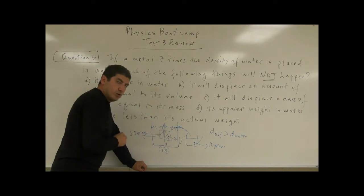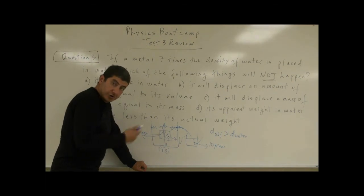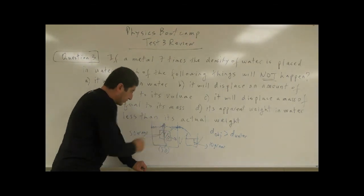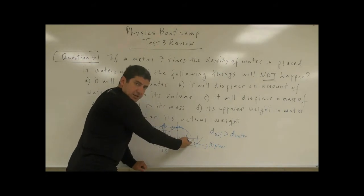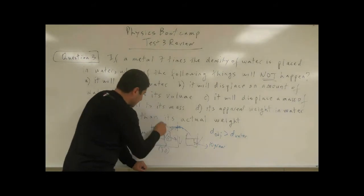what's the buoyant force on the object? Well, according to Archimedes' principle, the buoyant force on the object is equal to the mass of the displaced amount of water. 10 grams.